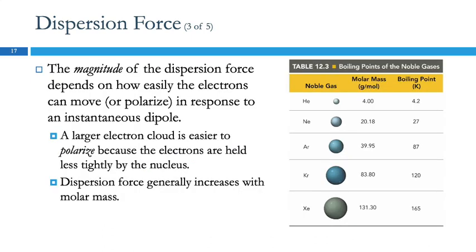The magnitude of dispersion forces depends on how easy it is to push the electrons around in a given atom or molecule—its polarizability. To have two dipoles next to each other, one has to happen spontaneously and then the neighboring one has to be induced. The electron cloud needs to be kind of floppy so the electrons can slide around. A larger electron cloud is easier to polarize because those electrons are held less tightly by the nucleus.